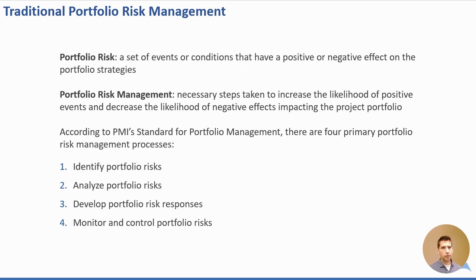According to PMI, there are four basic processes to consider. The first is identifying portfolio risks. The second is analyzing portfolio risk — the likelihood, the severity, the triggers, etc. Then, based on that, we develop the appropriate risk response. Finally, we monitor and control portfolio risk. You'd want to assign an owner to specific portfolio risks, but I'd highly recommend monitoring this with the portfolio governance team, because they're the primary decision makers for managing the portfolio.